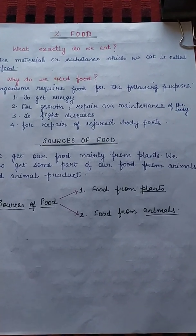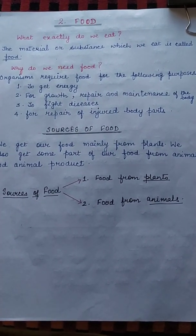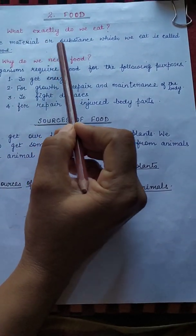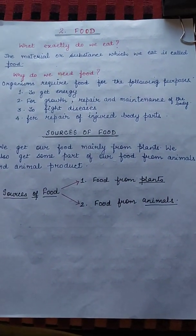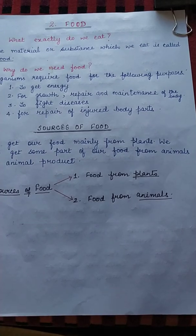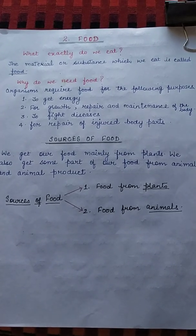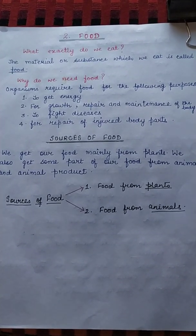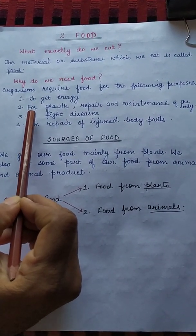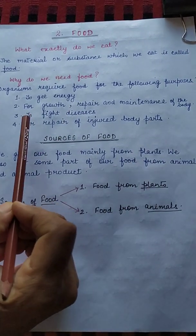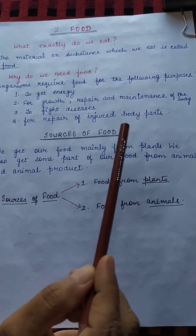There is an old saying which states: you are what you eat. But what exactly do we eat? The material or substance which we eat is called food. Food is one of the basic necessities of life. Organisms require food for the following purposes: number one, to get energy for growth, repair and maintenance of the body; number three, to fight diseases; number four, for repair of injured body parts.